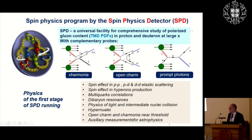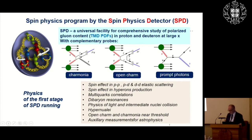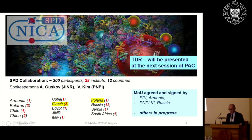Another program is devoted to the spin structure of the nucleon, because it's not yet clear how the spin of the proton is composed of quarks and gluons. Quarks contribute only about one-third of the spin, and the gluon contribution is still less studied. We plan to study open charm from proton-proton collisions and other processes to overcome the so-called spin crisis, which has not been solved for several decades.